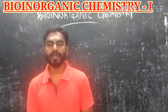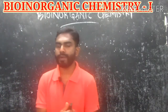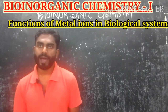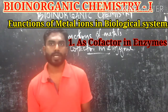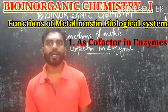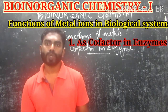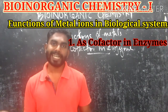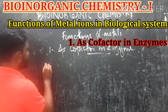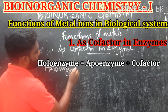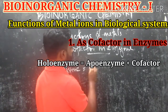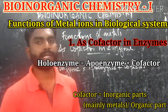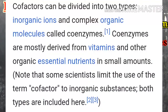Next, we discuss the important functions of metals in biological systems. The first function is as a cofactor in enzymes. Conjugated protein enzymes, also called holoenzymes, are those which contain a non-protein portion called a cofactor attached to the protein portion. Holoenzymes have two parts: the apoenzyme (the protein part) and the cofactor (the inorganic or non-protein part, mainly a metal).